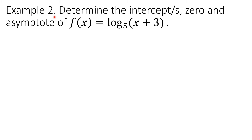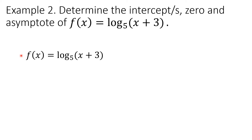Example 2: Determine the intercepts, zero, and asymptote of f(x) = log₅(x + 3). Let us solve first for the x-intercept or zero of the function. To do so, we substitute 0 to y, giving us 0 = log₅(x + 3).